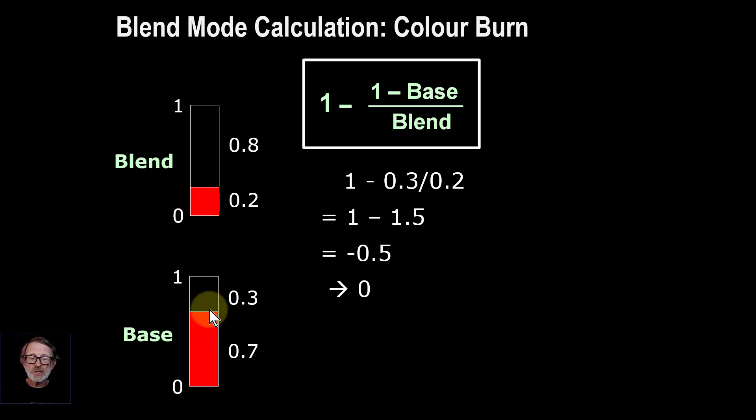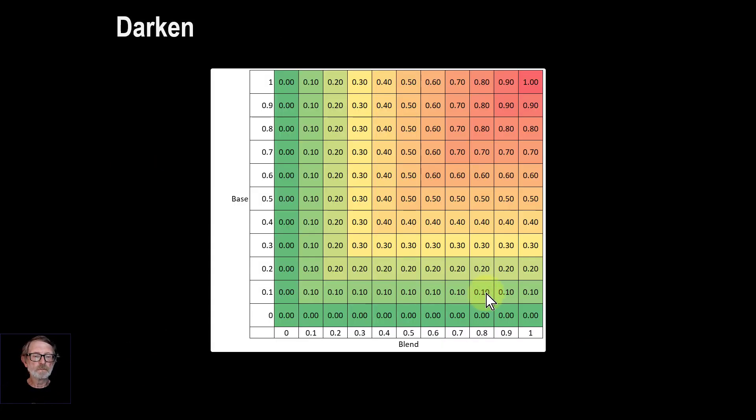And so now let's have a look when it gets to 0.2. So now this means the calculation is going to be you're going to have 0.3 divided by 0.2, which means you're going to get a negative number. You can't have a negative number with colors, so it just gets clamped to 0. So it's also black. So in other words, when this gets lower than this, then it's going to end up black.